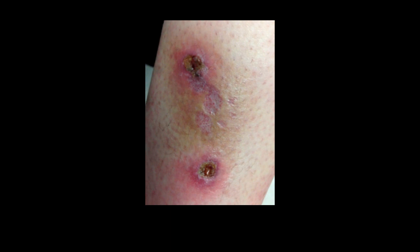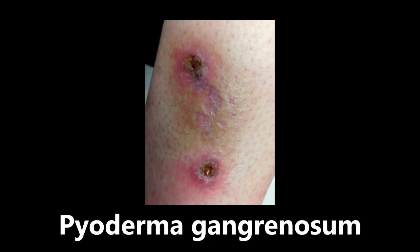Moving on, we have a bit more derm. This is an example of pyoderma gangrenosum — painful ulcerations that frequently affect the legs. The exact cause is unclear; it may be an immune reaction. It is seen in inflammatory bowel disease, including Crohn's disease and ulcerative colitis. One important thing to note: the most common dermatologic manifestation of IBD is erythema nodosum, but pyoderma gangrenosum can also be manifested from those diseases.